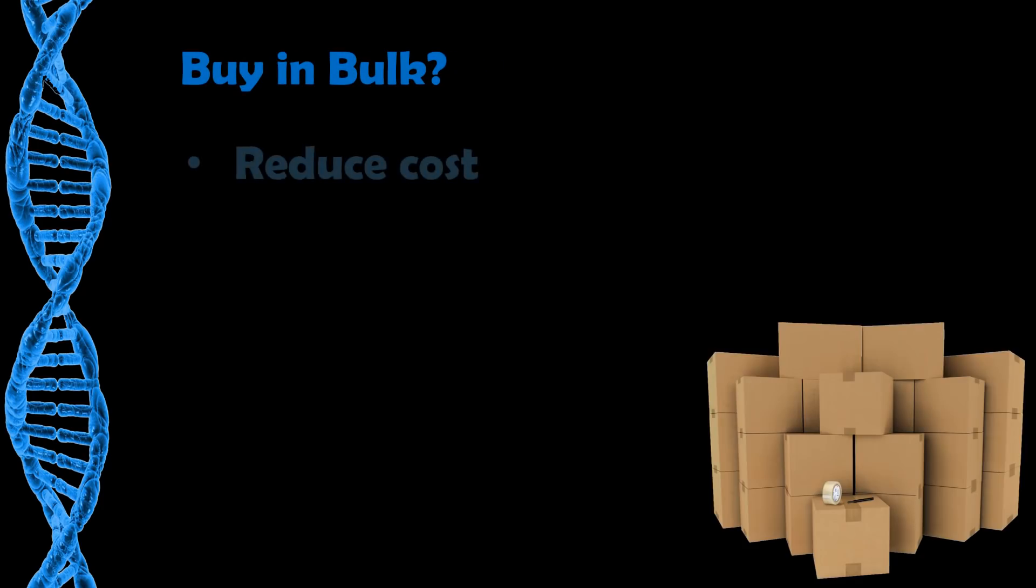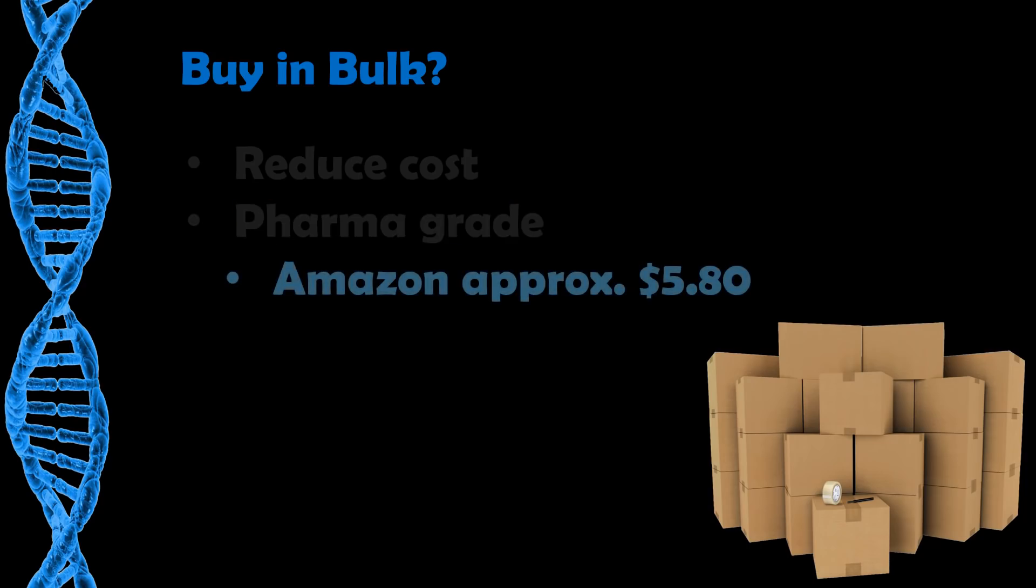So, something else you may want to consider is buying in bulk. You could consider reducing the cost of NMN by making a bulk purchase. Now, pharmaceutical grade, if you buy it from Amazon, as we've said before, is about $5.80 per gram. Now, you can buy and ship pharmaceutical grade from China for about $2,500. That works out about $2 to $2.50 per gram. That's more than a 50% saving. Now, the shelf life of NMN is two years. So, to prevent having to throw half of it away, you may want to split the cost with a friend and that would give you both a one-year, five-month supply.